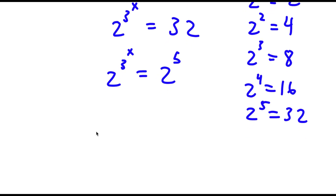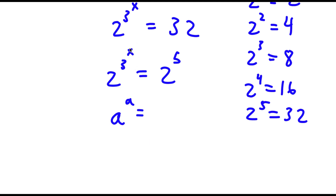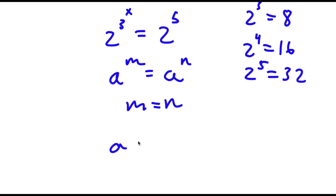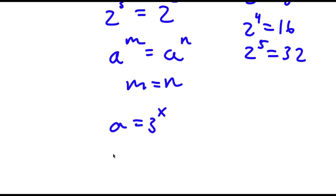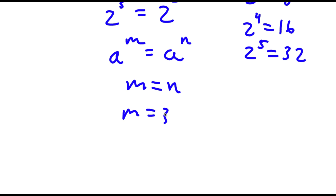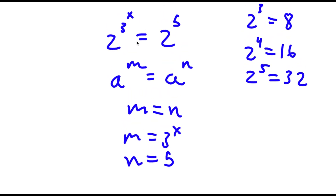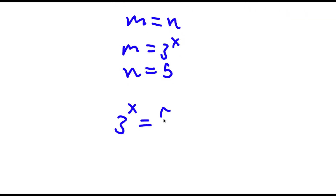Now if I have something in the form a to the power of m is equal to a to the power of n, this means that m is equal to n. So in this case, m would equal 3 to the power of x, and n would equal 5, meaning 3 to the power of x is equal to 5.